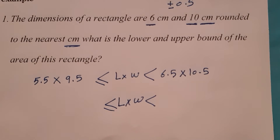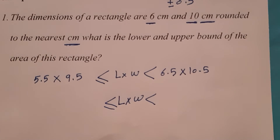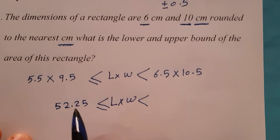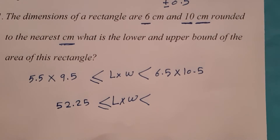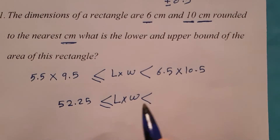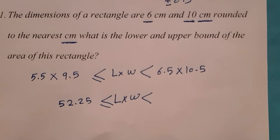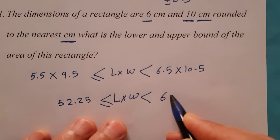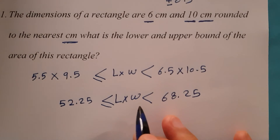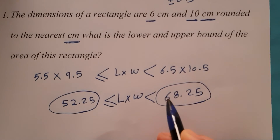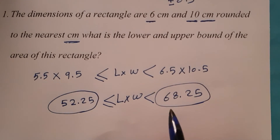Using a calculator: 5.5 times 9.5 equals 52.25. And the upper bound: 6.5 times 10.5 equals 68.25. So the minimum area of the rectangle is 52.25 square centimeters, and the maximum area is less than 68.25 square centimeters — this is the upper bound of the rectangle's area.